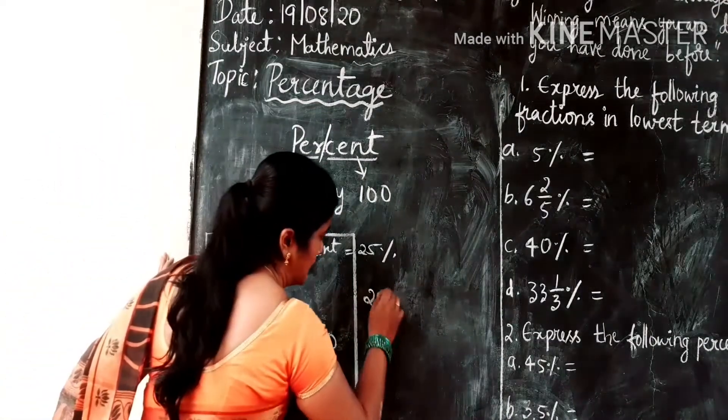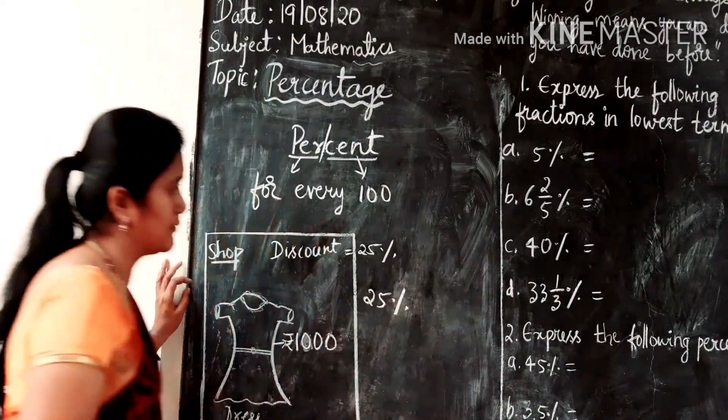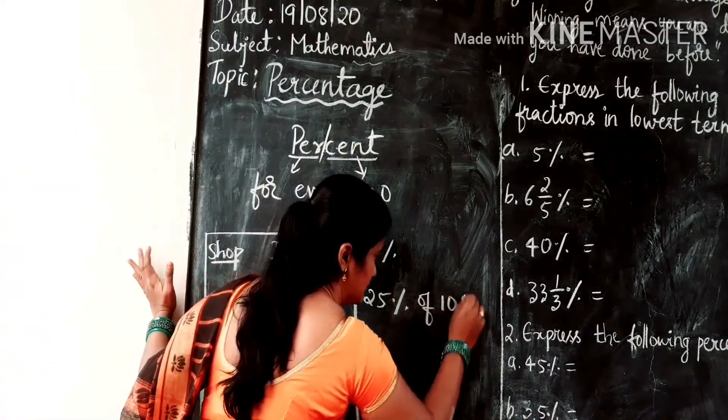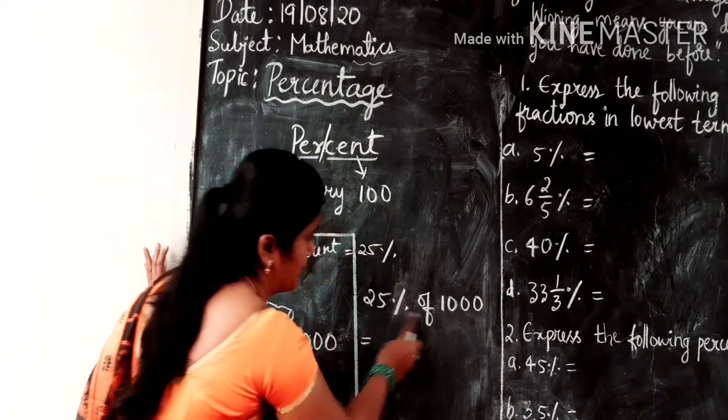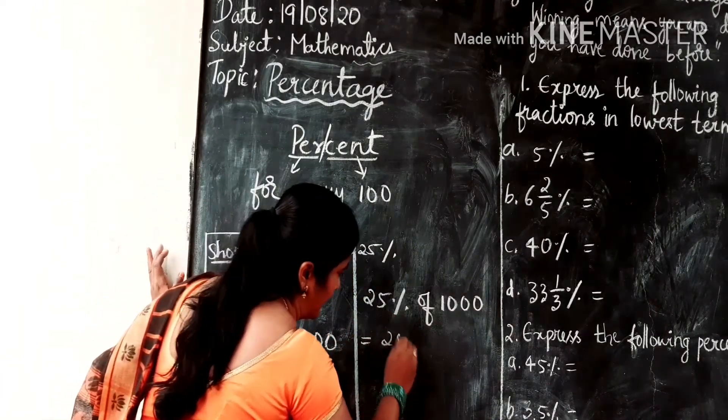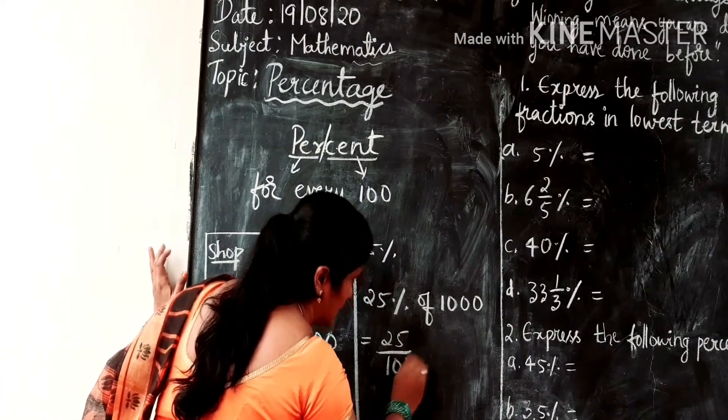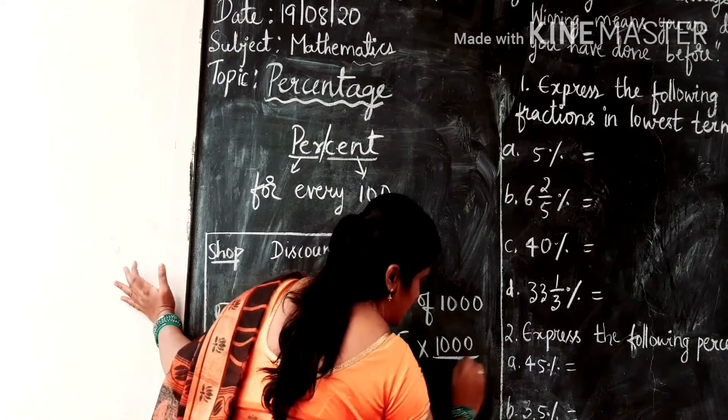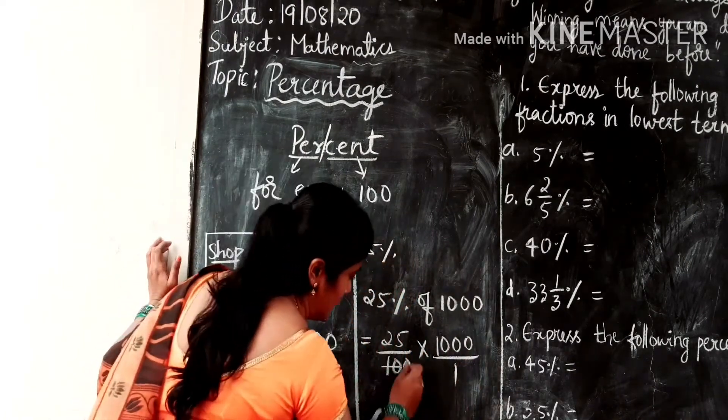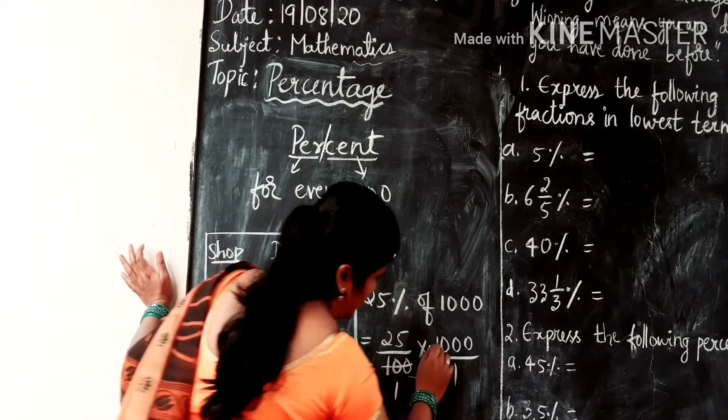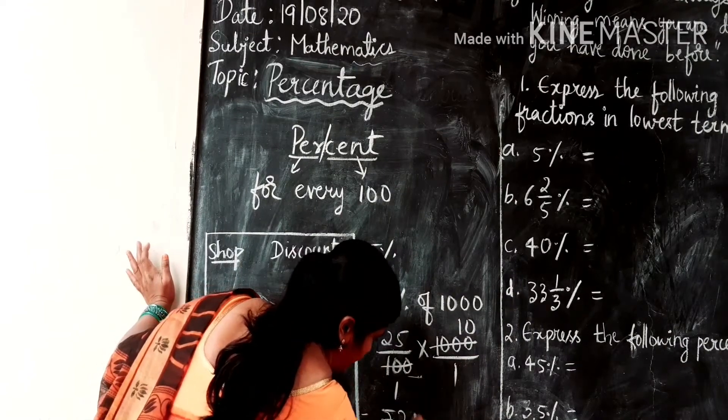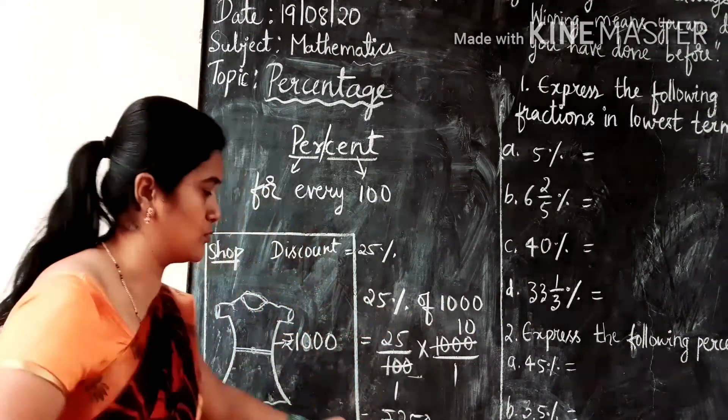How do you calculate? So what is 25 percent of 1000? 25 percent means 25 by 100. Of means you have to multiply by 1000. We can cancel with 100 table here. So 25 into 10 means 250. So what is this 250?